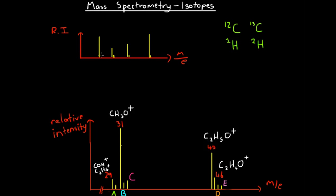These peaks would not only be caused by fragments containing carbon-13 instead of carbon-12 — they could alternatively contain carbon-12 but have hydrogen-2 instead of hydrogen-1. So just one of the hydrogen atoms in the molecule was, in fact, a hydrogen-2 atom. That would also cause this very small peak to occur at a mass-on-charge ratio of one greater than the original peak.